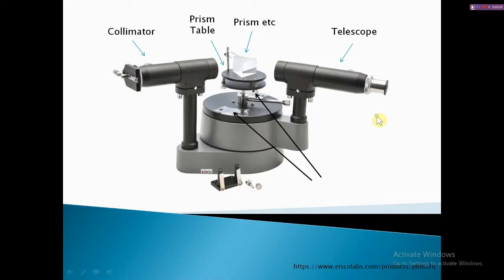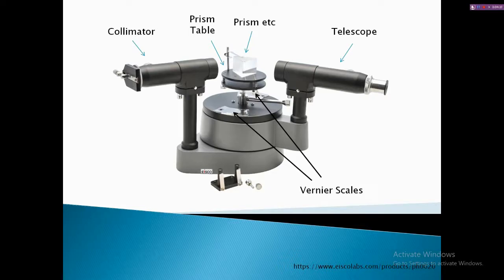To summarize: a spectrometer has three parts — the collimator, the prism table, and the telescope. One more important point is that there are two scales from which readings should be noted down. These are the vernier scales. During the experiment we fix one as vernier one and the other as vernier two. During the entire experiment you should not interchange the verniers — they should always remain fixed as one and two.